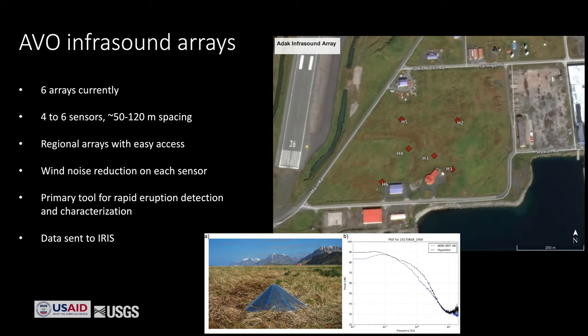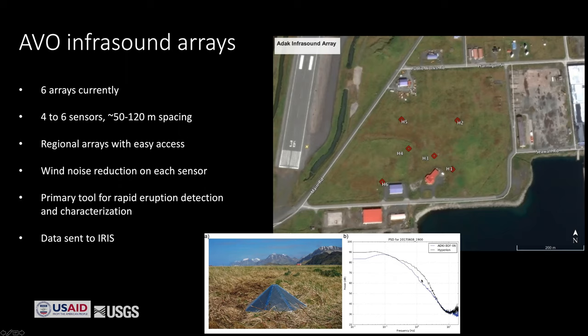In Alaska there's not much vegetation — in the Aleutians it's typically just grasses. To control wind noise, we've begun using mesh aluminum domes that sit over the sensor and reduce wind noise. A power spectral density plot shows about an 8 dB decrease in background wind noise by putting this dome — essentially a wind filter — over the sensor. We are now outfitting all of our arrays in Alaska with these domes, although if you have thick forest you can put the array in the trees and it acts similarly.